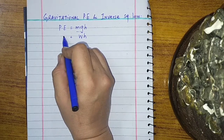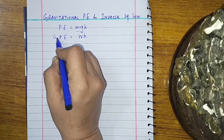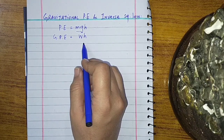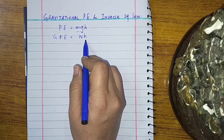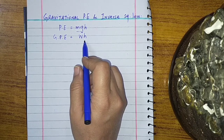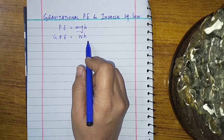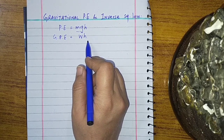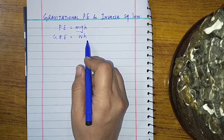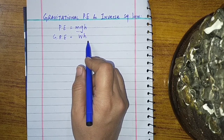Gravitational potential energy is the potential energy in the gravitational field. This gravitational field is also known as a conservative field. We have studied that a field is conservative if the work done in that field is independent of the path followed.